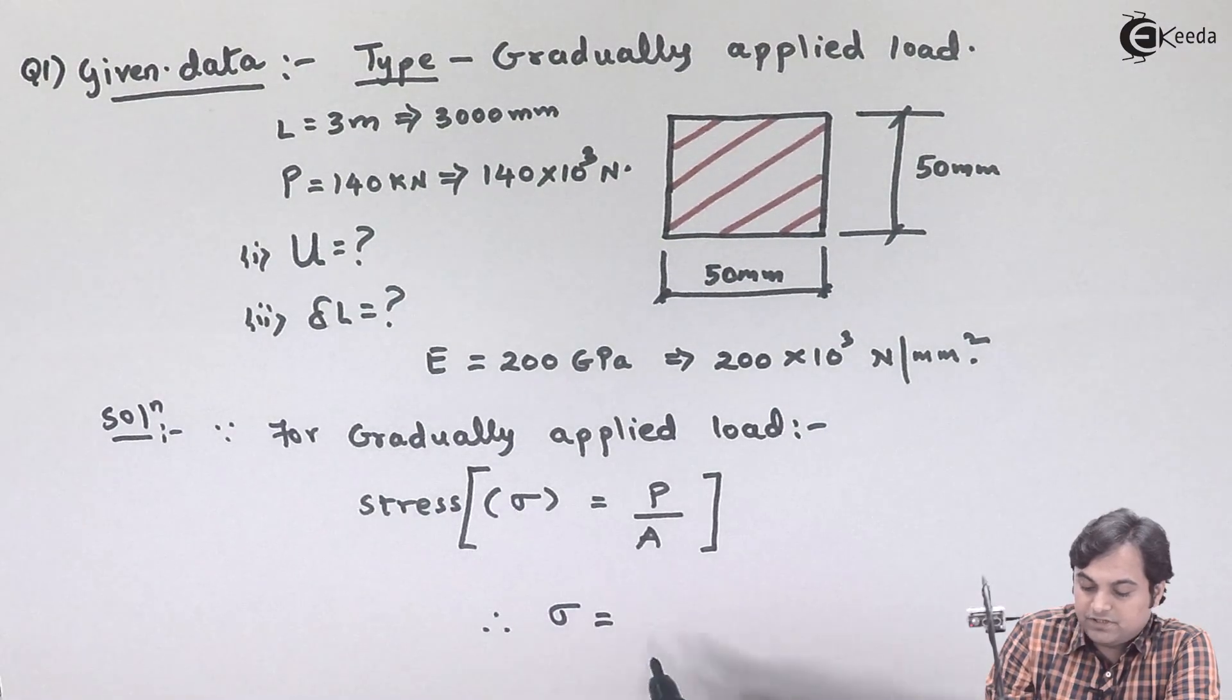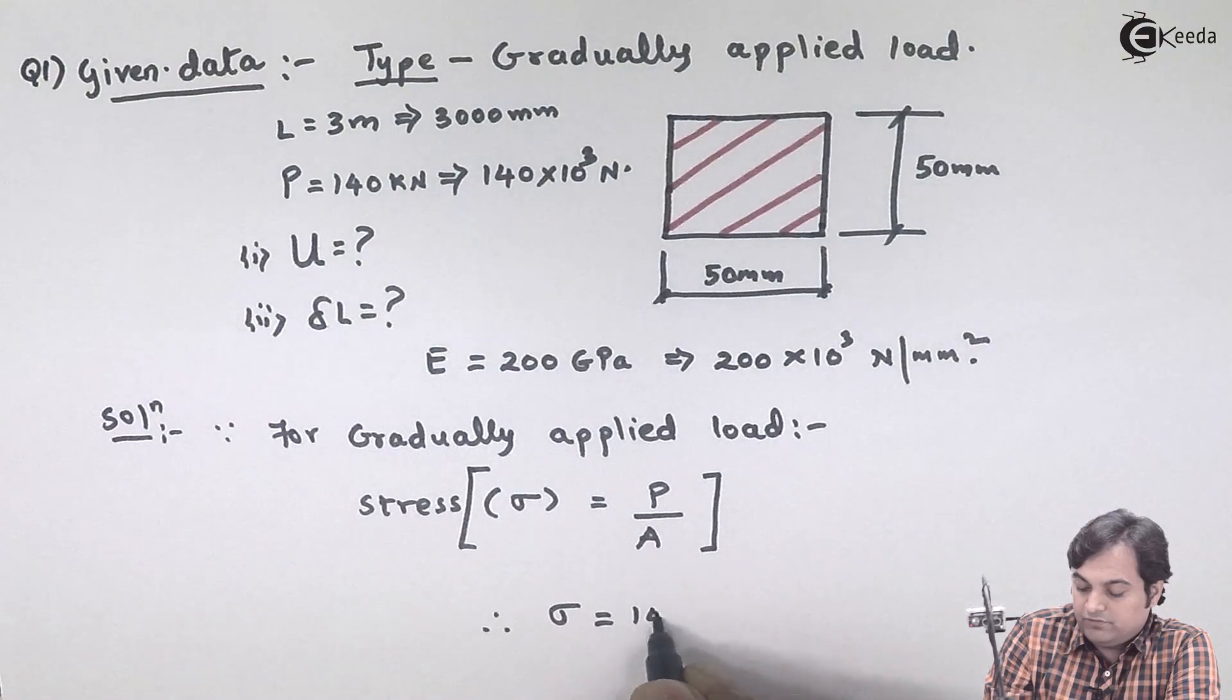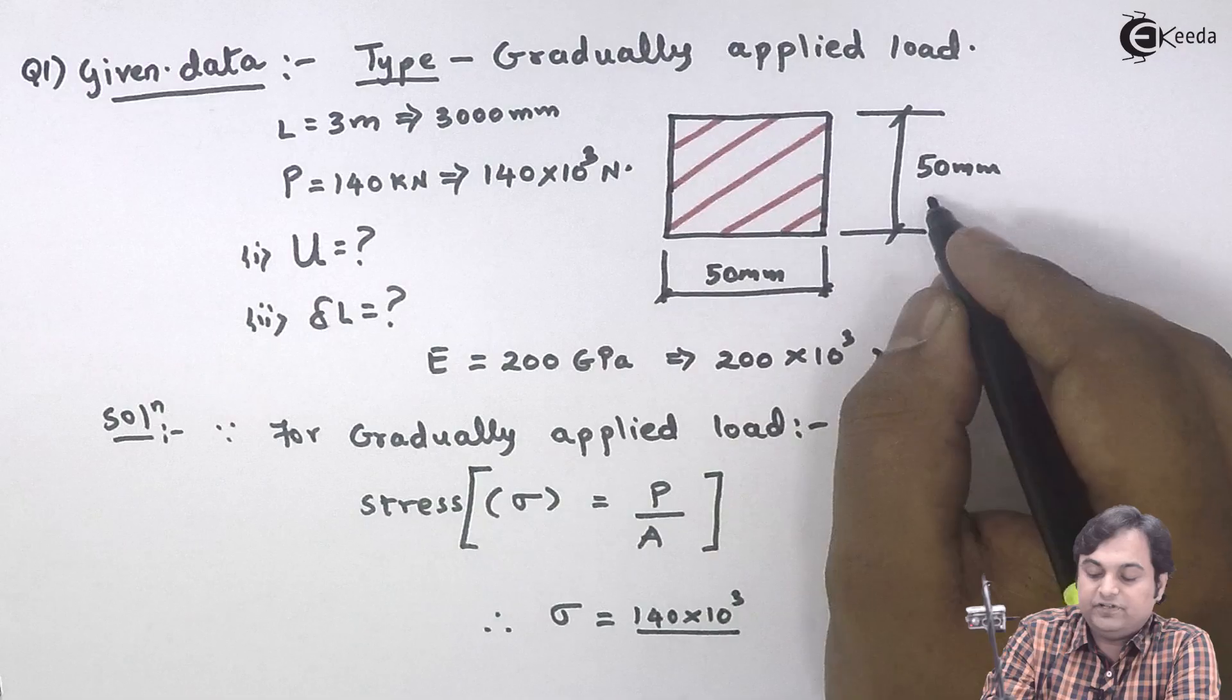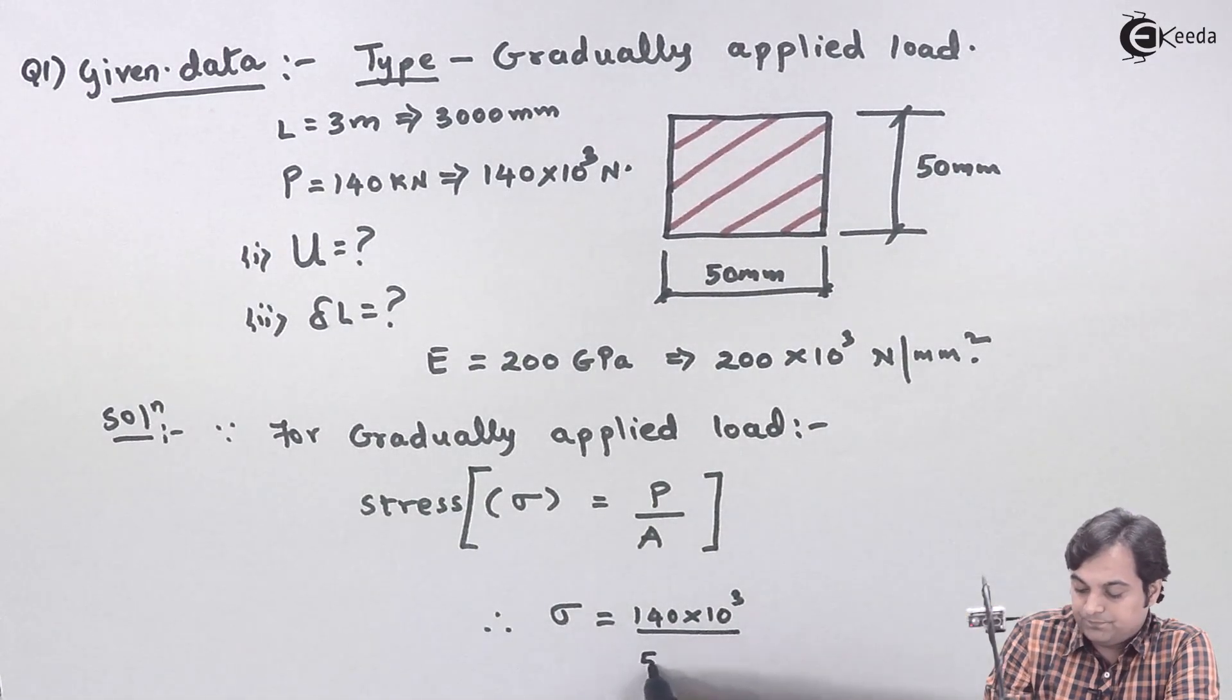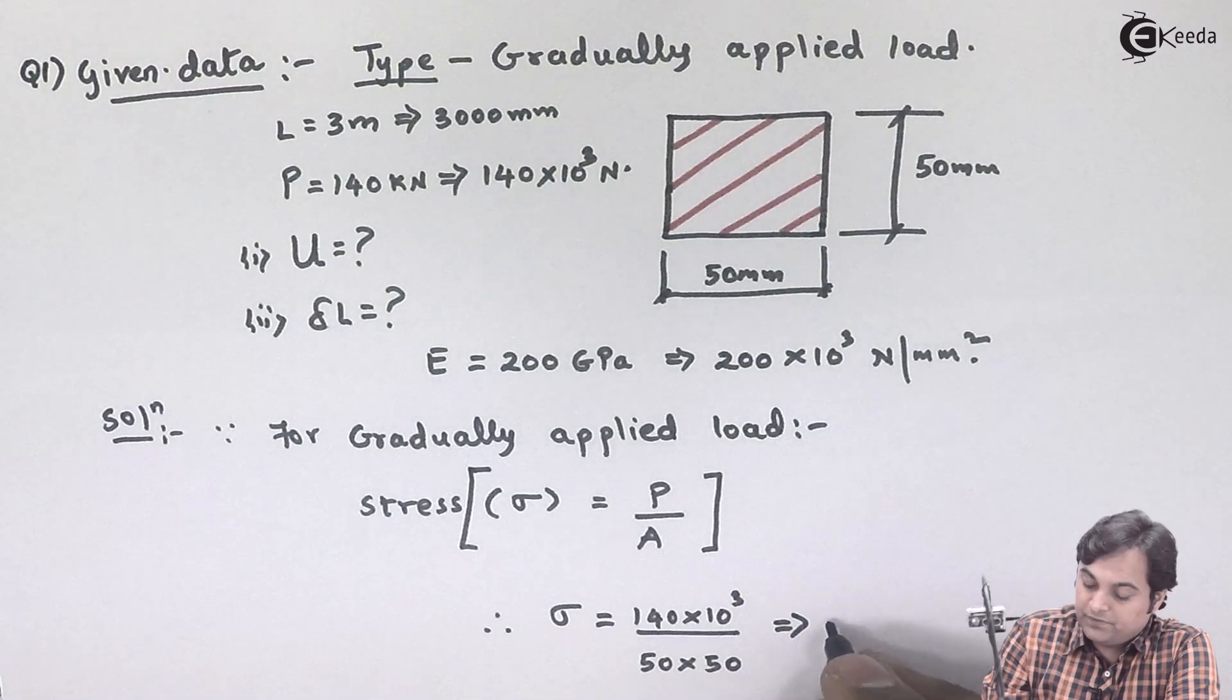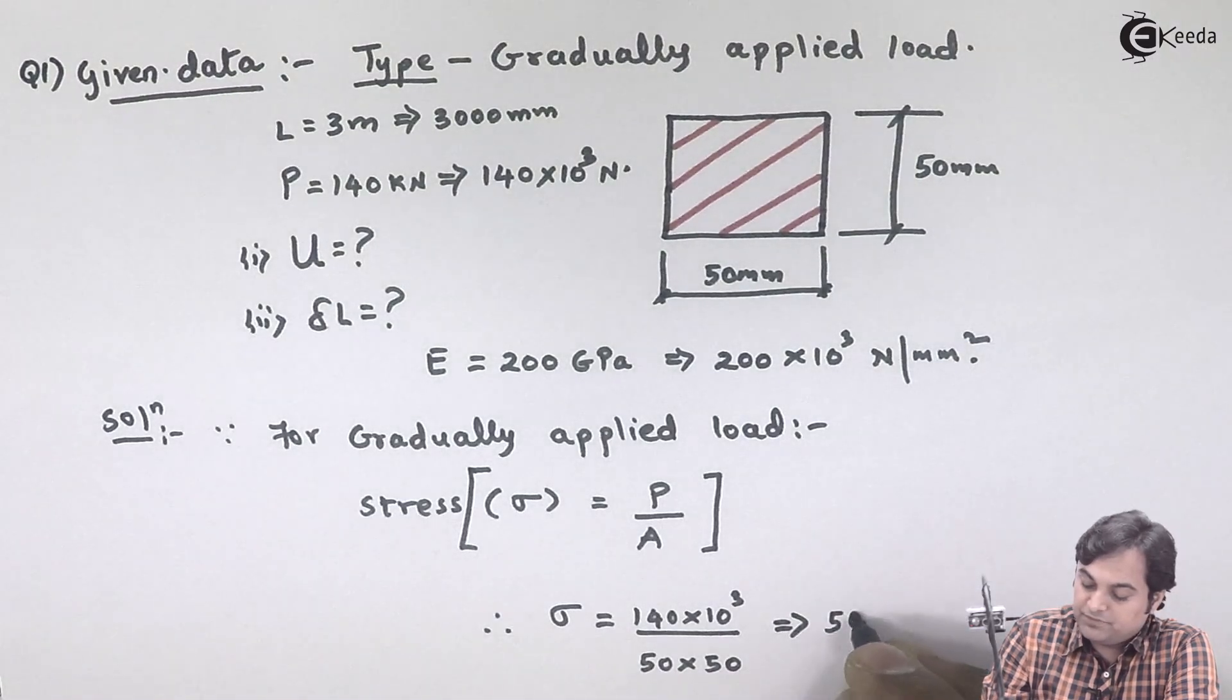Therefore, stress is equal to load, which is 140 times 10 to the power 3, divided by area, which is 50 into 50. So therefore, stress value will be 56 Newtons per mm squared.